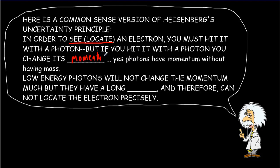If you wanted to get around that, you'd use really low-energy photons. The low-energy photons have less momentum, so they're not going to change your momentum very much — you'll know momentum more precisely. The problem is, low-energy photons have a long wavelength. The way we can locate things with waves is to say they're within one wavelength, between two crests. Therefore, you're not going to be able to locate the electron very precisely if you use low-energy photons.